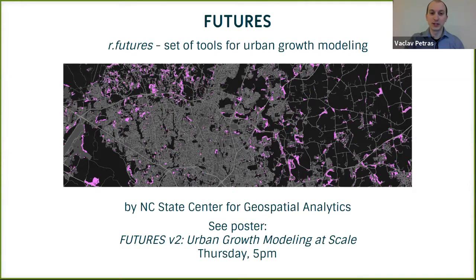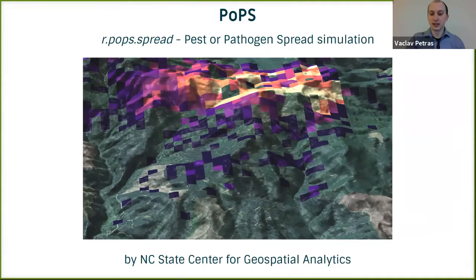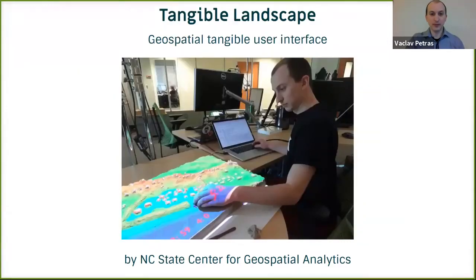I'll show you some tools we've developed. One is Futures, a set of tools for urban growth modeling — there will actually be a poster about it at 5 PM right after this talk. Then we are working on POPS, which stands for Pest or Pathogen Spread Simulation, used for modeling sudden oak death and spotted lanternfly spread in the United States. It requires some calibration but is available in GRASS GIS. We are also working on Tangible Landscape, a tangible geospatial user interface that allows you to use GRASS GIS tools in an interactive sandbox.